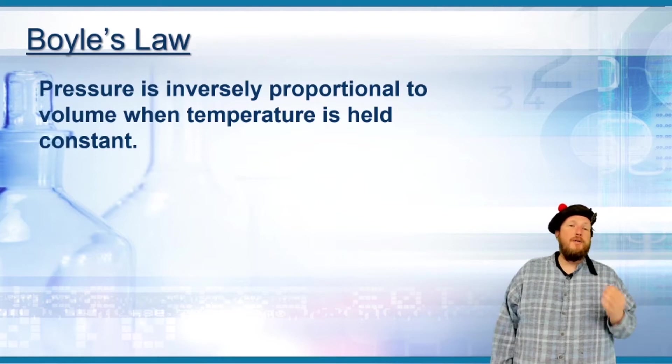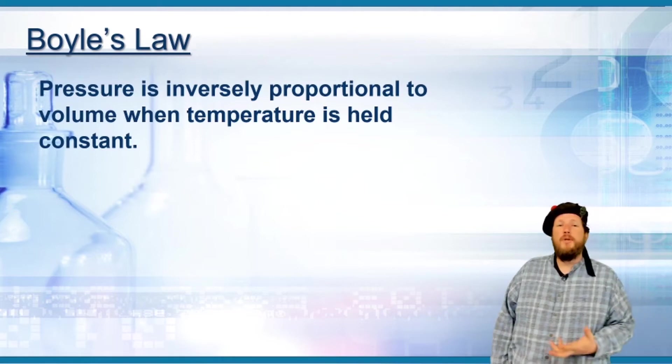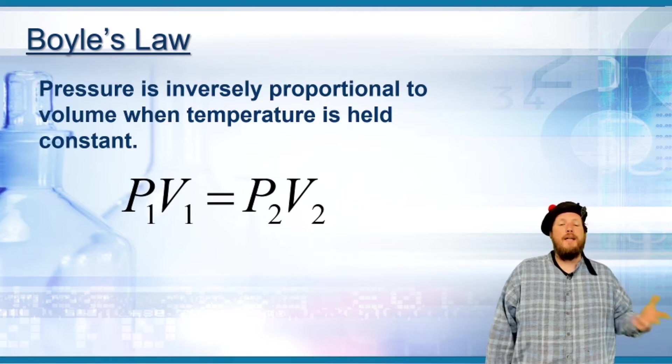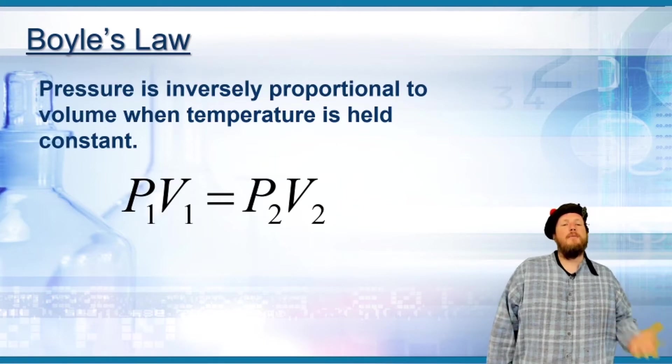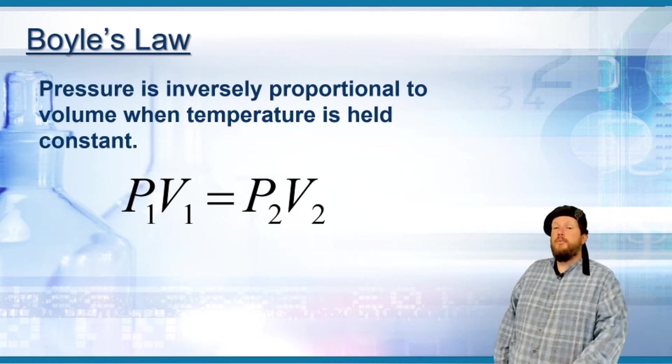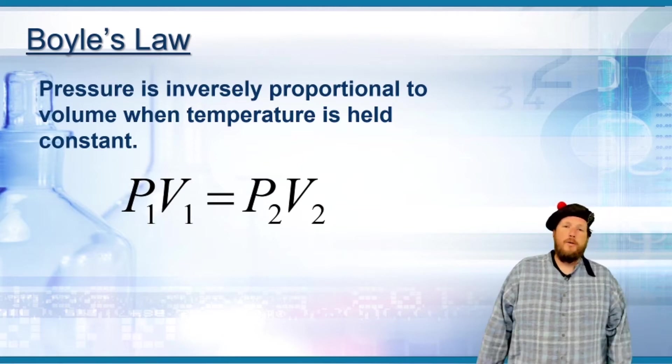Boyle's law says pressure is inversely proportional to volume when temperature is held constant. So P1V1 equals P2 times V2. Pressure one times volume one, initial pressure and volume, is equal to the product of final pressure and volume.